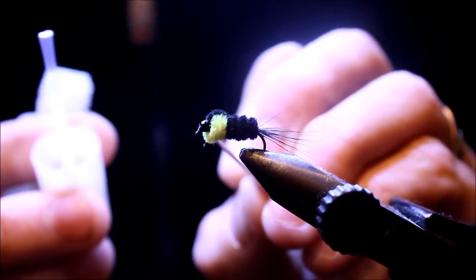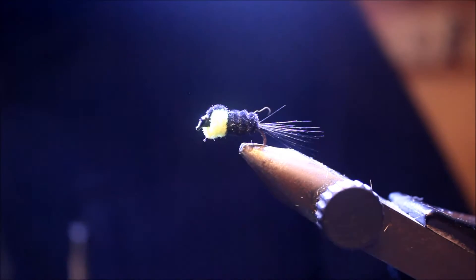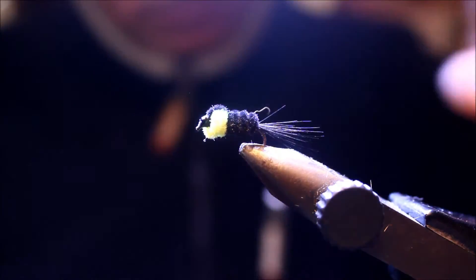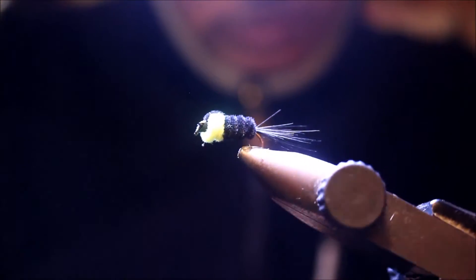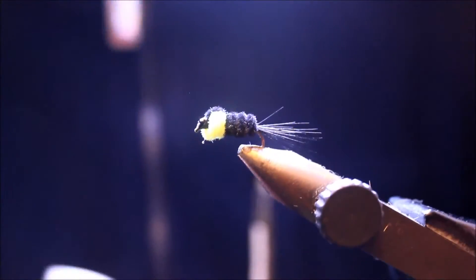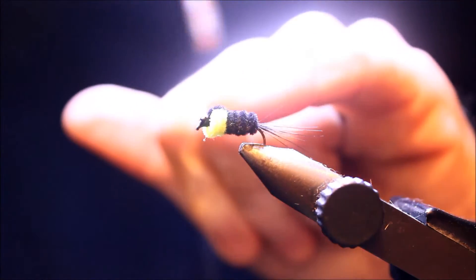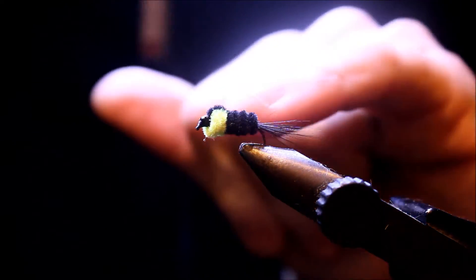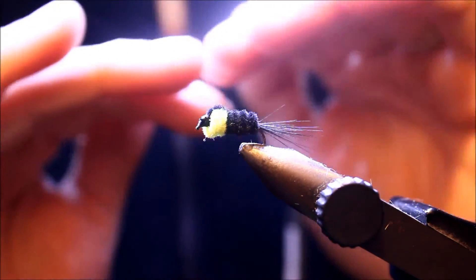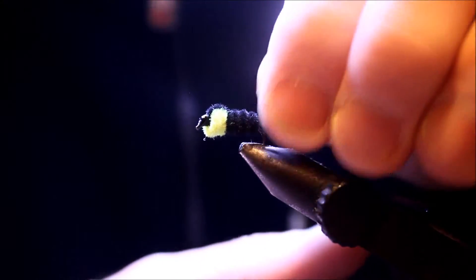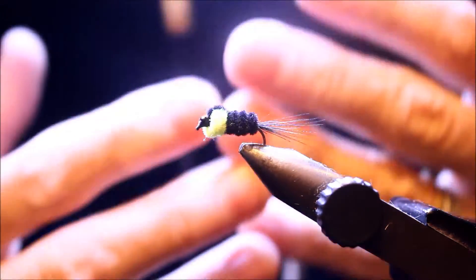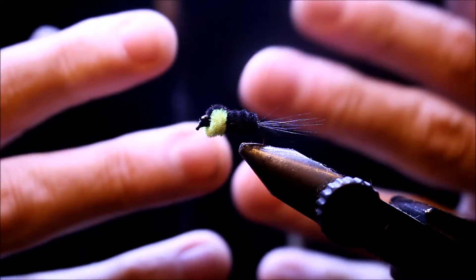Voilà une mouche très très connue, c'est une mouche redoutable en réservoir. Vous pouvez utiliser différentes variantes de cette mouche. Vous pouvez mettre sur la portion chartreuse un petit hackle noir qui viendra mettre un petit peu des fibres de chaque côté qui la rendra un peu plus nageante avec un peu plus de mouvement. Vous pouvez la faire plus longue, beaucoup plus lourde, beaucoup plus légère. Bref, vous l'avez compris, c'est une mouche qui de toute manière pourra être utilisée dans plein de conditions.